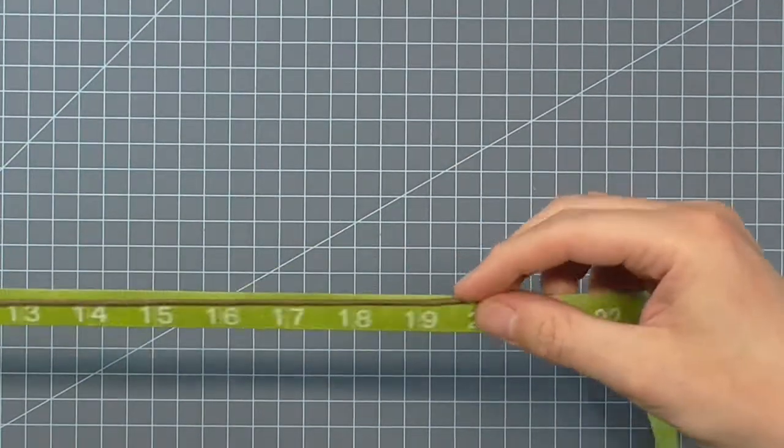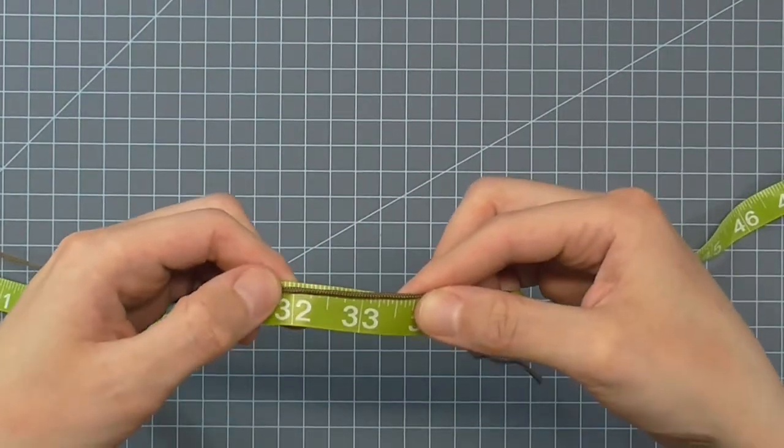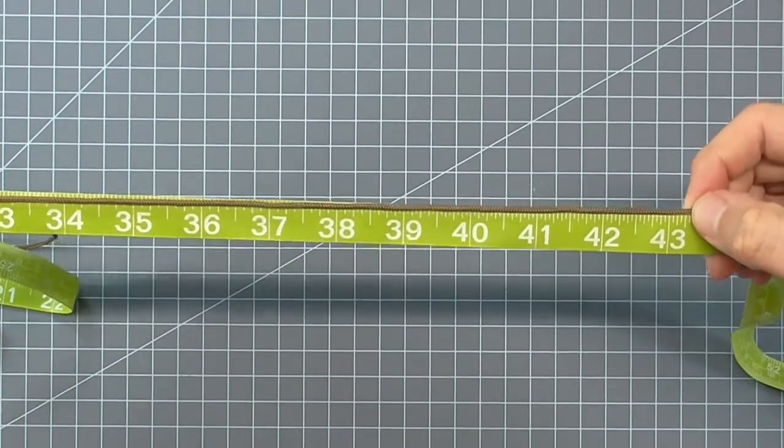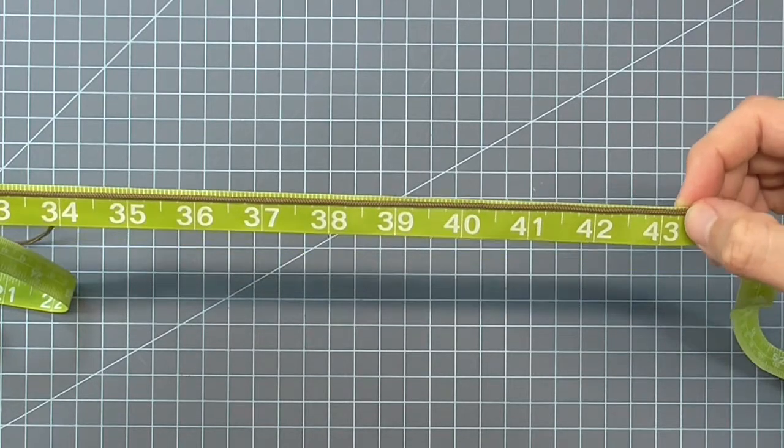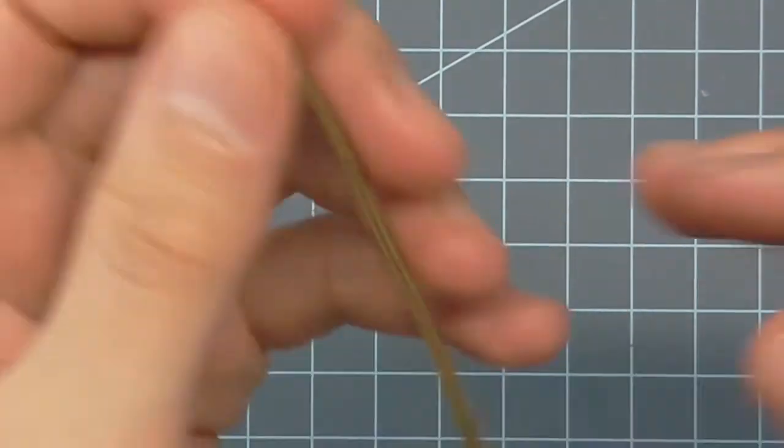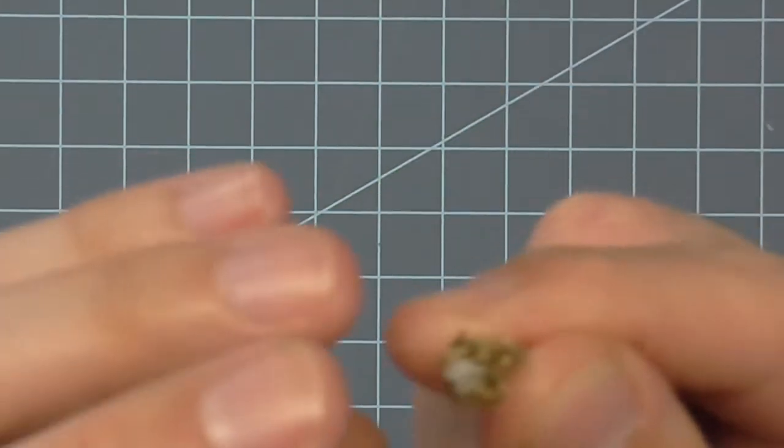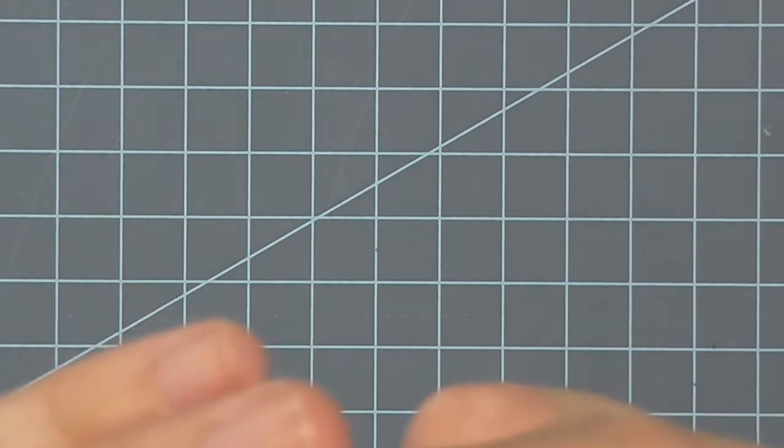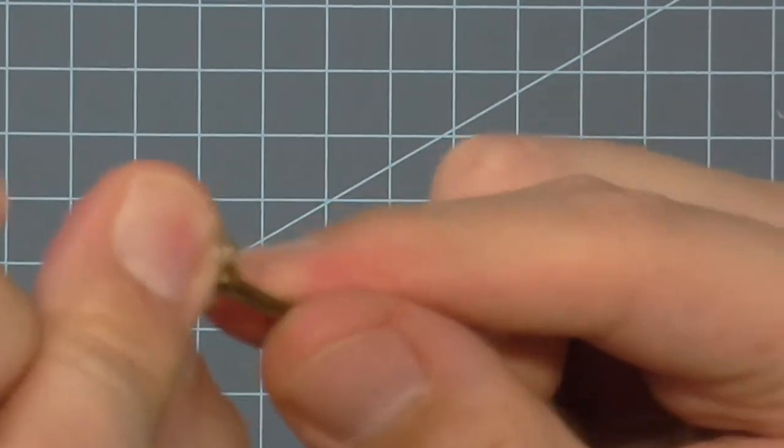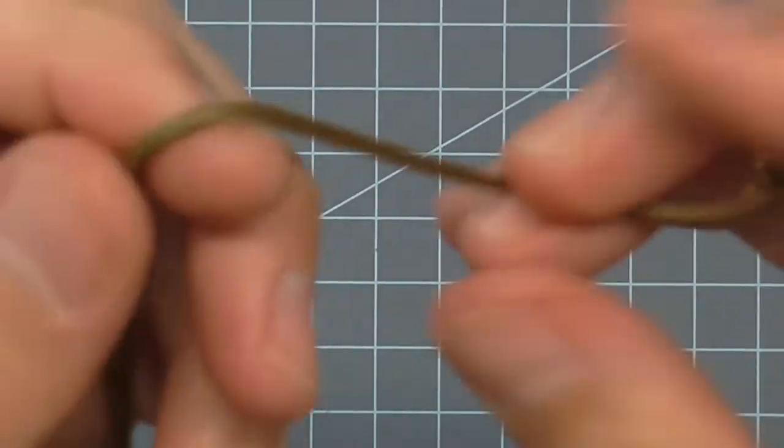For the paracord, you're going to measure out the same distance as the wire, 32 inches, plus you need to add at least 8 to 10 inches. The paracord shrinks and expands as it goes along. Now paracord has a 5-strand core inside. I'm tapping the end to expose the cord and pulling out the cord to gut the paracord. This creates a hollow tube that we can put the wire through. This is the magic of this technique.